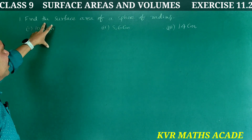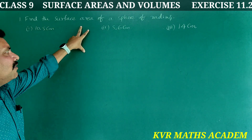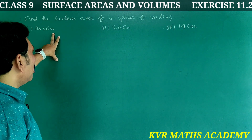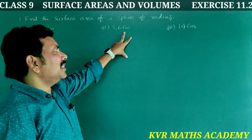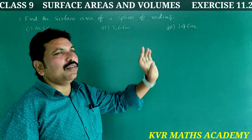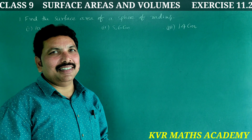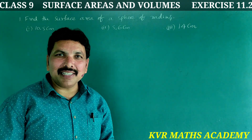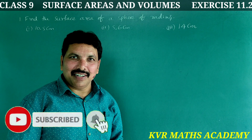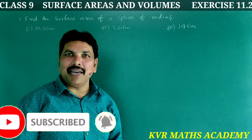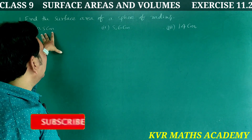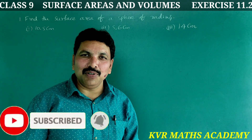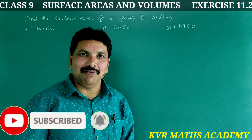This is the first question: find the surface area of a sphere of radius 10.5 centimeters, 5.6 centimeters, and 14 centimeters. The surface area of a sphere formula is 4πr². So, surface area = 4πr².